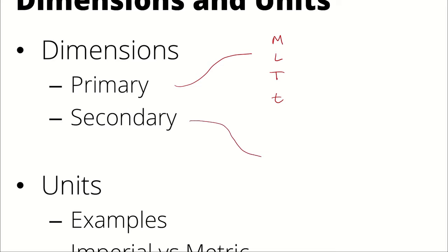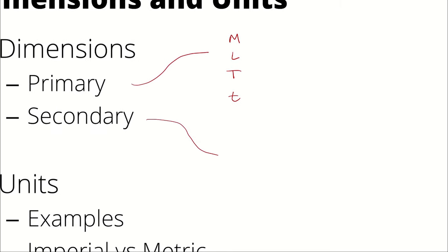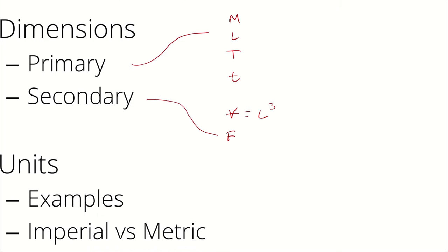Secondary dimensions are dimensions that are made up of the primary dimensions. For example, volume is a secondary dimension. And it is made up of length cubed. It is made up of primary dimensions. Force is another secondary dimension. You could describe force as a mass times acceleration. Acceleration would be length per time squared. Therefore, the force dimension would be mass length per time squared. Pressure is a secondary dimension. That would be force per length squared, which would be mass per length times time squared.